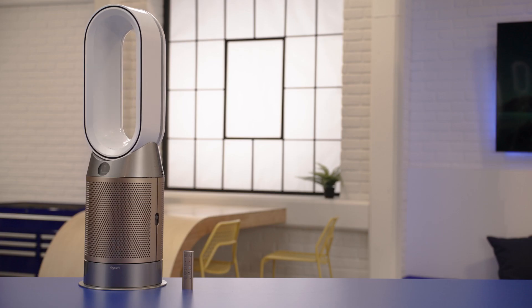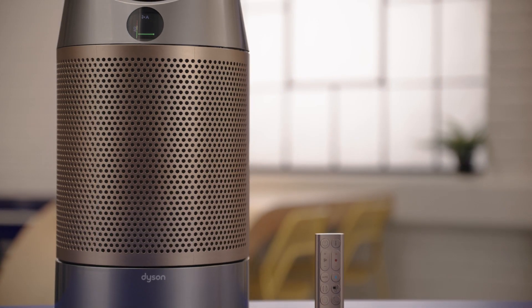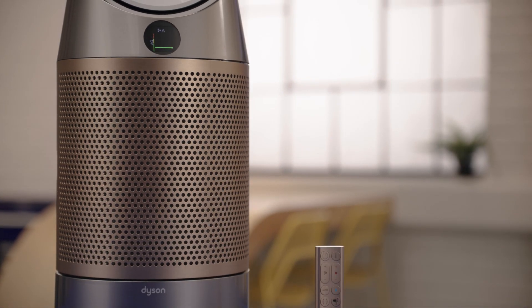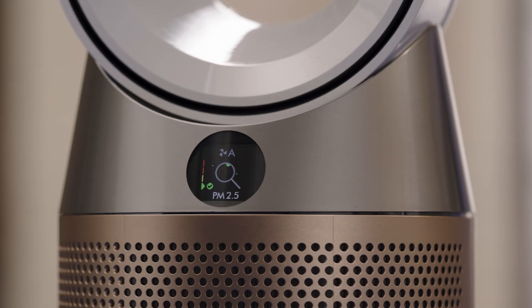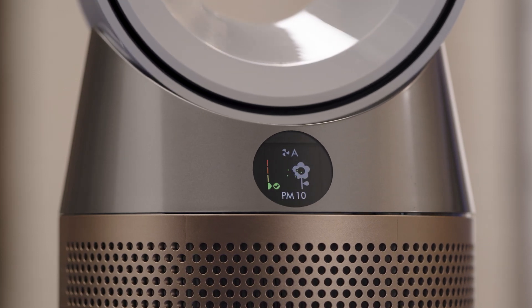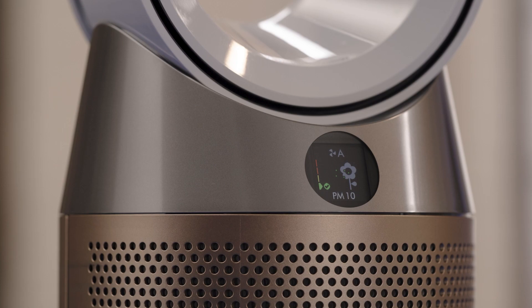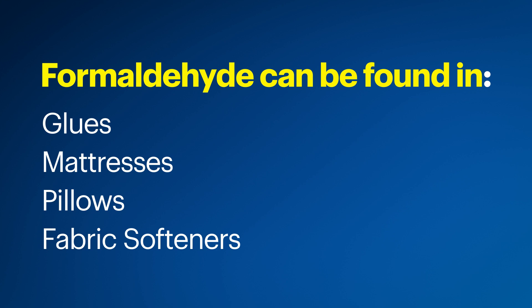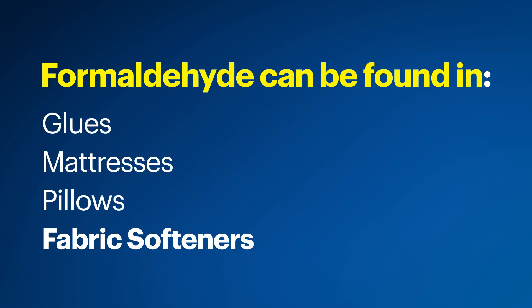The Dyson HP09 air purifier automatically purifies air in your home by detecting and capturing particulate matter like dust and smoke, volatile organic compounds from household cleaners, paints, varnishes, and nitrogen dioxide from burning gasoline or propane. What makes this purifier stand out is its ability to not only detect, but then destroy formaldehyde, which is found in many household products including glues, mattresses, pillows, and fabric softeners, to name a few.